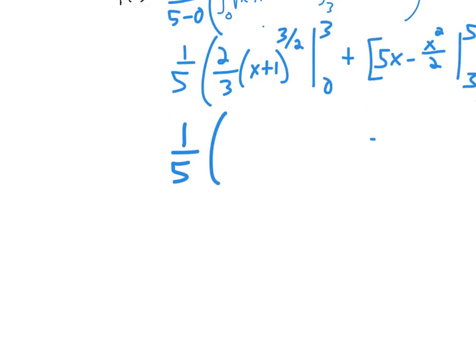Which is tough because this is a no calculator problem. So 4 to the 3 halves is the same thing as 4 squared over the square root of 4, because these bases are the same. This is 4 to the 1 half, 4 to the 2. So since the bases are the same, their powers subtract. 2 subtracted by 1 half gives you 3 halves.